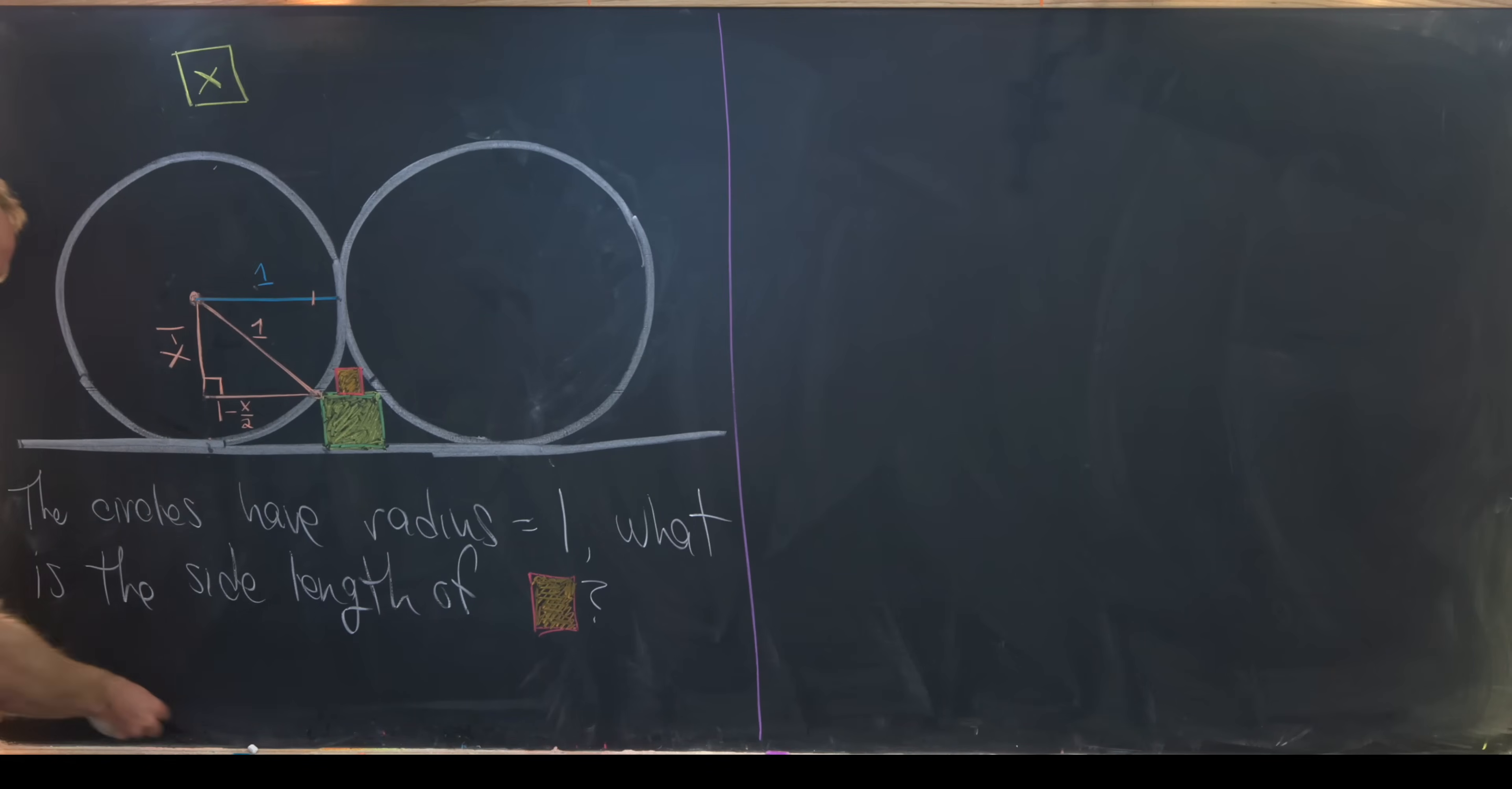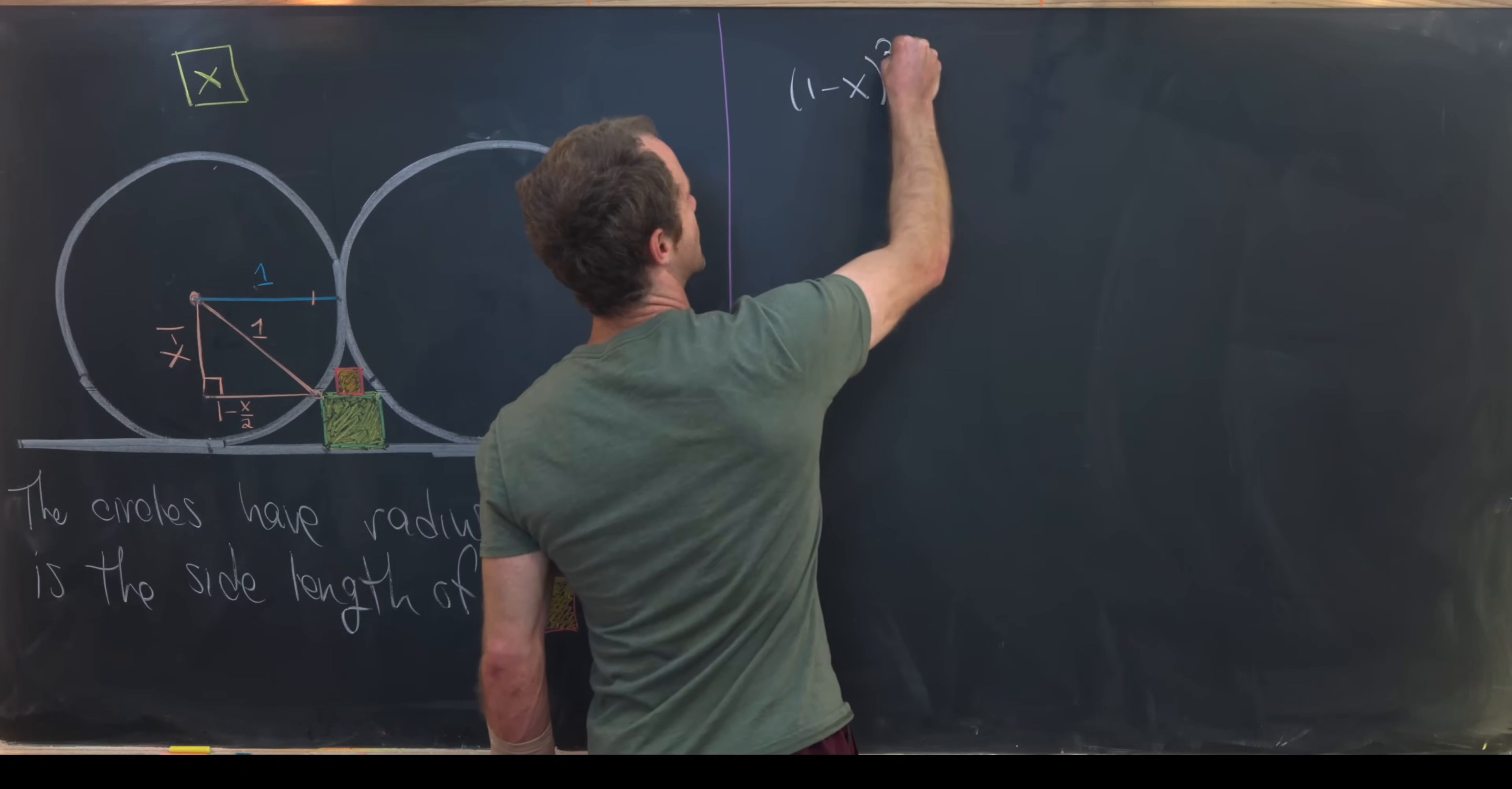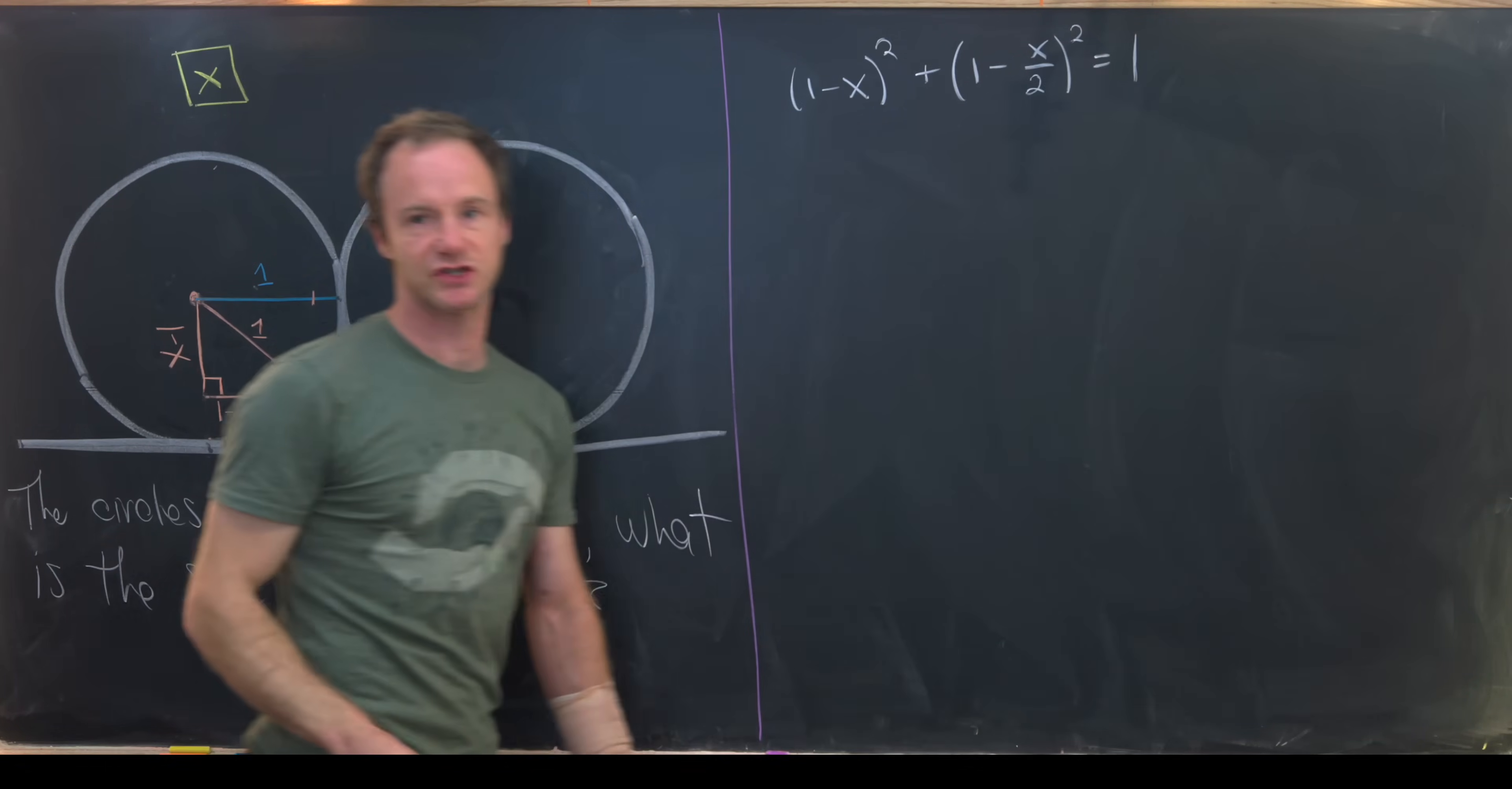But now by the Pythagorean theorem, we can easily build an equation for x. Notice we have (1 - x)² + (1 - x/2)² equals 1², which is just 1.